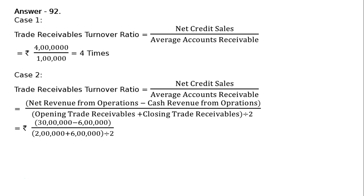That is equal to Rs. 2 lakh plus Rs. 6 lakh whole divided by 2, giving Rs. 24 lakh divided by Rs. 4 lakh, which equals 6 times. Note: a zero in numerator and denominator was omitted in the second last step by mistake. The answer for case 2 is 6 times.